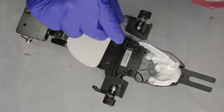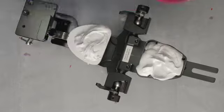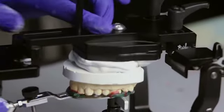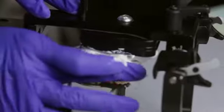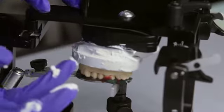It's now time to add the mounting plaster onto the maxillary cast and the mounting plate. The excess is removed carefully and the plaster is smoothed out. The assembly is then kept aside until the plaster sets.